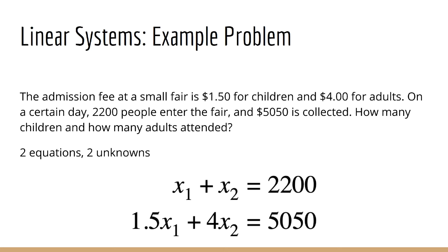In order to solve this problem, we're going to create two variables x1 and x2 to represent the number of children and number of adults respectively. Translating the word problem into math, we get that x1 plus x2 is equal to 2200, and 1.5*x1 plus 4*x2 is equal to 5050.